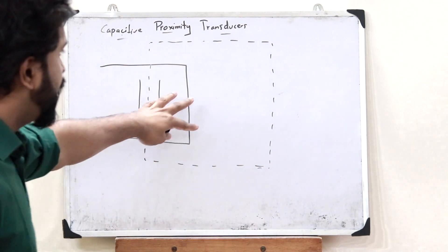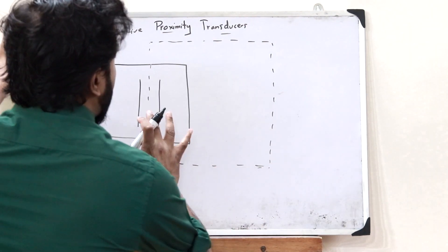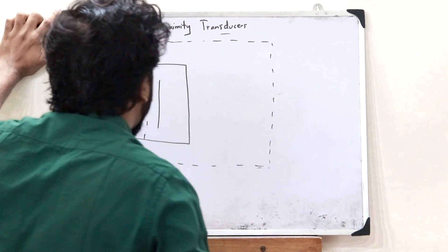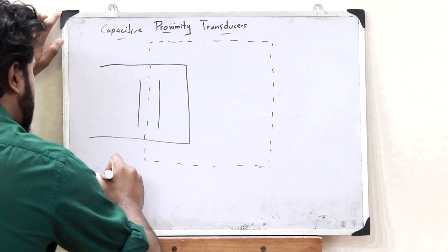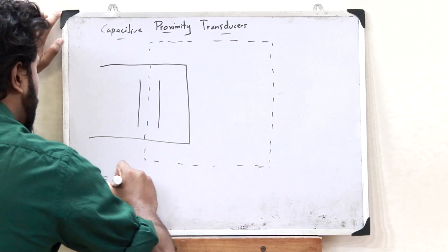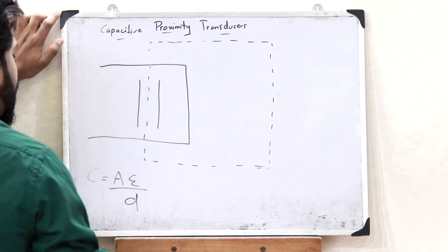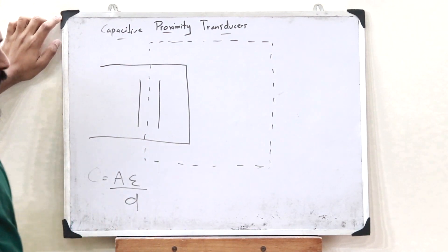This is the range of this particular proximity transducer. Now the capacitance of this particular parallel plate is given as C equals A epsilon divided by D. Here epsilon is the permittivity of free space.